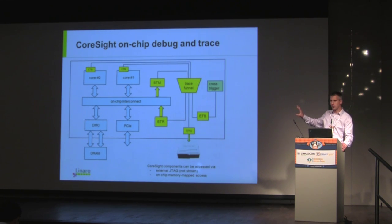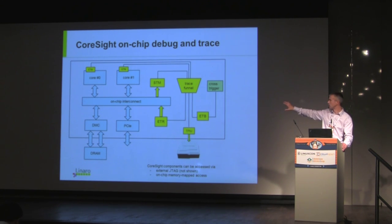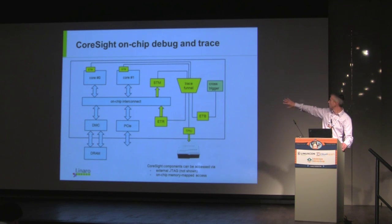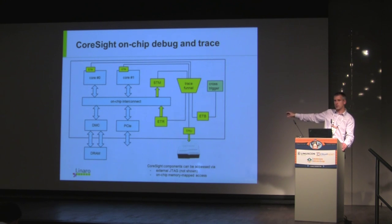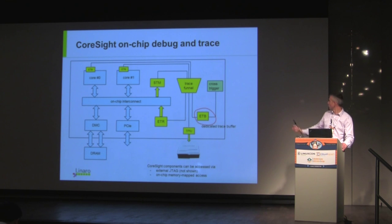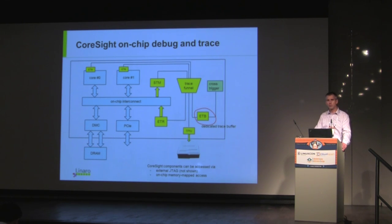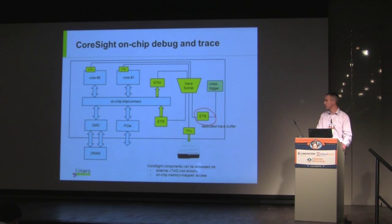It's mostly non-invasive. We hook up the cores to something we call ETM — Embedded Trace Macrocell — and we funnel this trace into various trace collectors. We have something called an ETB, Embedded Trace Buffer, which is a piece of dedicated memory on the chip, typically something like 8K to 32K of dedicated memory.